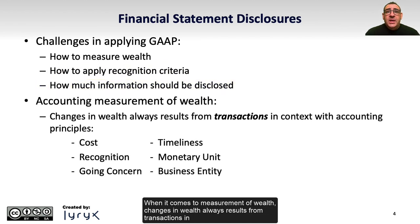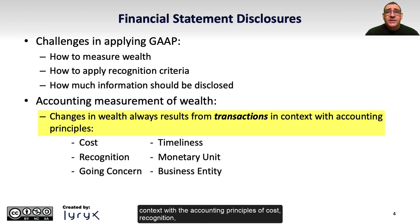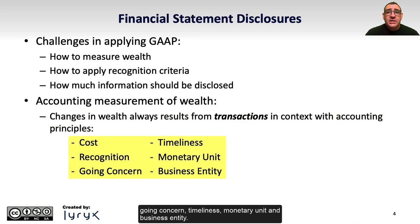When it comes to measurement of wealth, changes in wealth always result from transactions in context with the accounting principles of cost, recognition, ongoing concern, timeliness, monetary unit, and business entity. If you're not sure what these are, you should refer back to Learning Objective 3 in Chapter 1.